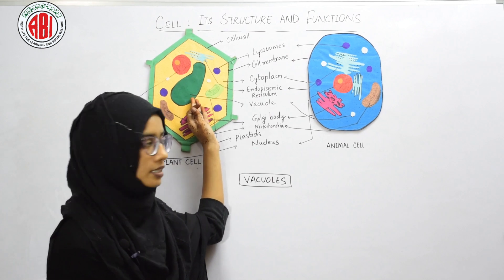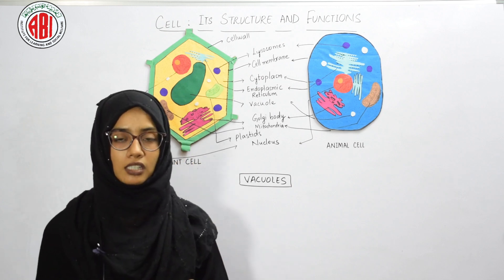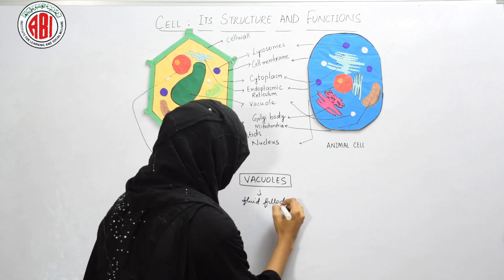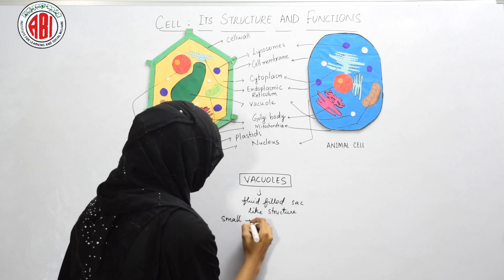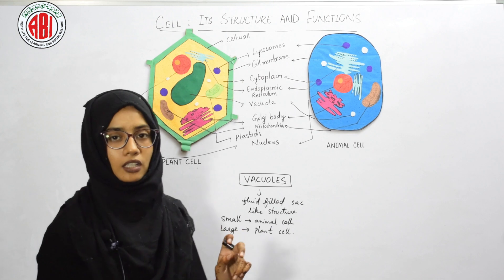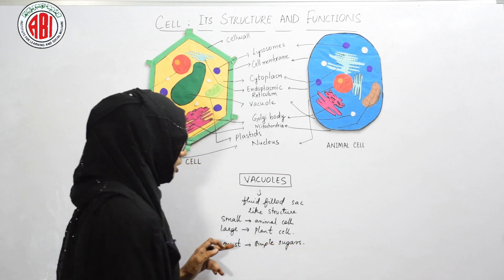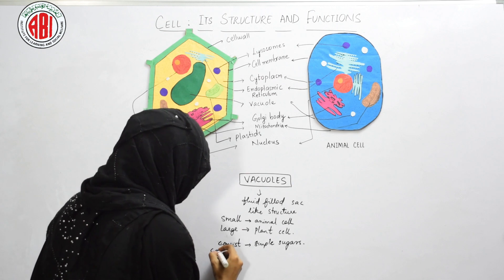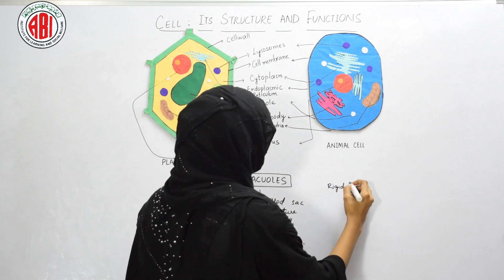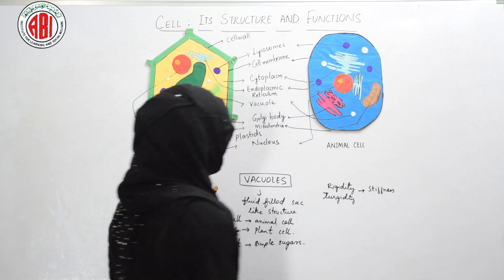Now we will study about vacuoles. Large-size vacuoles are present in plant cells, whereas small-size vacuoles are present in animal cells. In plant cells, 50 to 90 percent of the space is occupied by vacuoles. These vacuoles are fluid-filled sac-like structures consisting of simple sugars and other substances, and they are filled with cell sap. The function of vacuoles is to provide rigidity and turgidity to the cell.